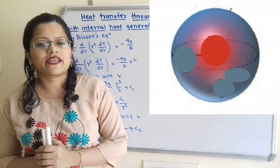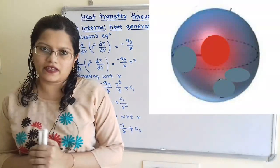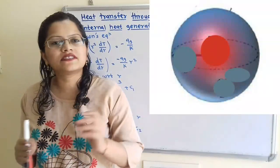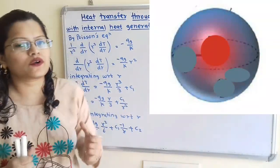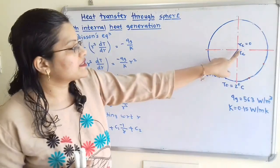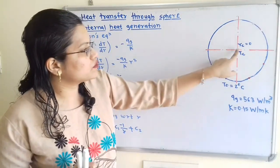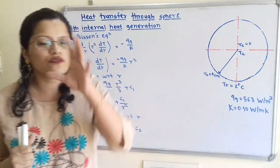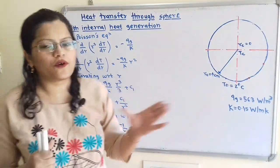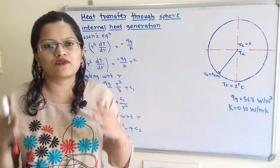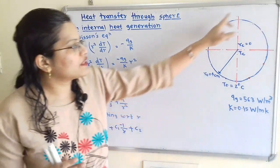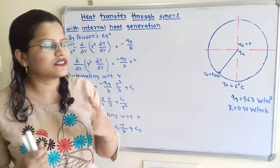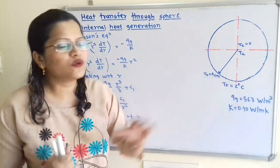Let us understand the given data with the help of a diagram. This is the case of a sphere. The radius at the center is 0, and we have to find the temperature at the center, so RC is equal to 0 and TC is to be found. The radius for the whole sphere is 4 cm, so RO is equal to 4 cm.